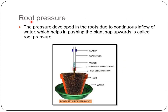Now let us look at root pressure. Root pressure develops in the roots due to continuous inflow of water by the cells, which helps push the plant sap upwards. To demonstrate this, we can take a well-watered plant in a pot, cut it a few centimeters above the soil, and immediately fix a glass tube over the cut end using a strong rubber tubing connection.